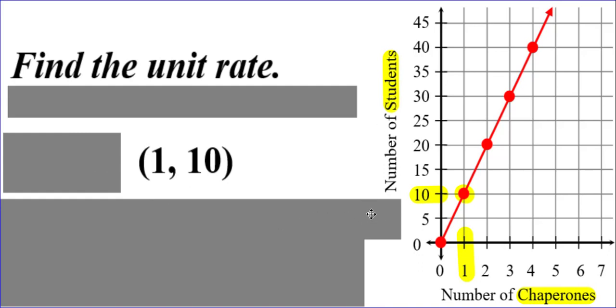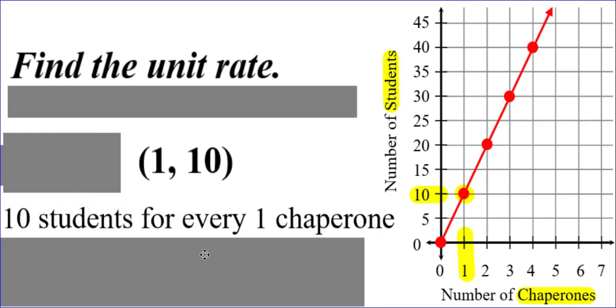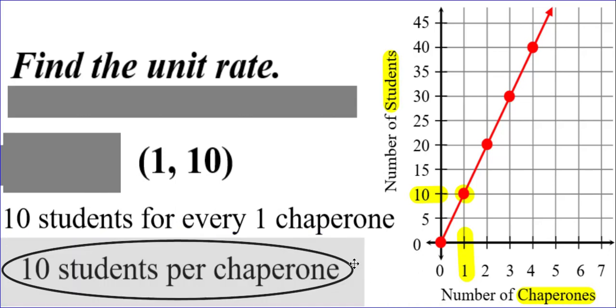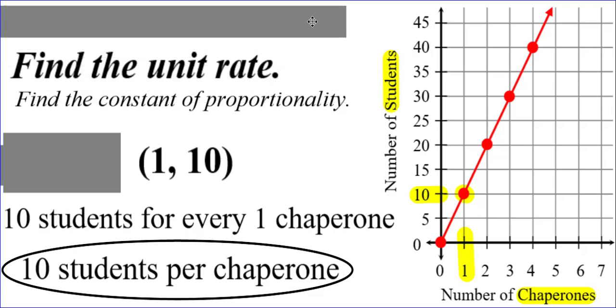Looking at the labels, it was 10 students for every 1 chaperone, or in other words, 10 students per chaperone. That is your unit rate. Sometimes you will hear unit rate being called the constant of proportionality—a fancy phrase, but a synonym for unit rate.